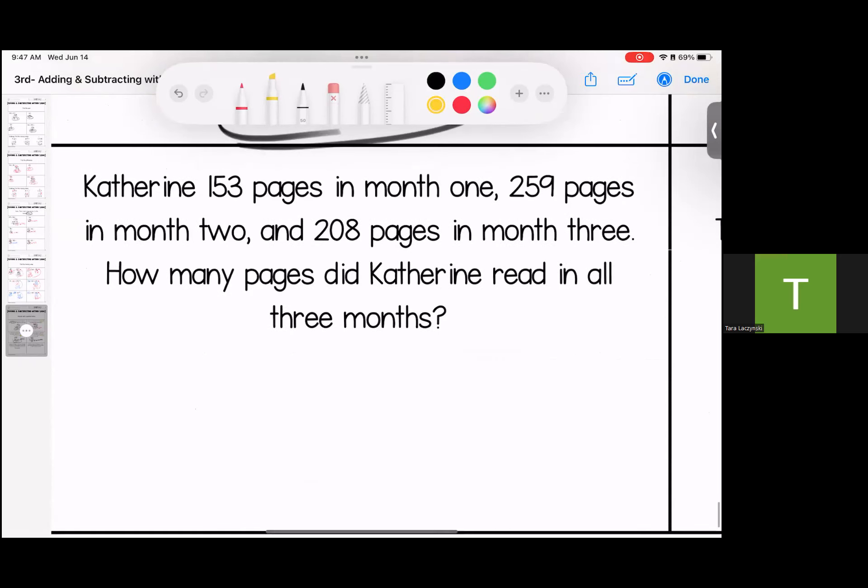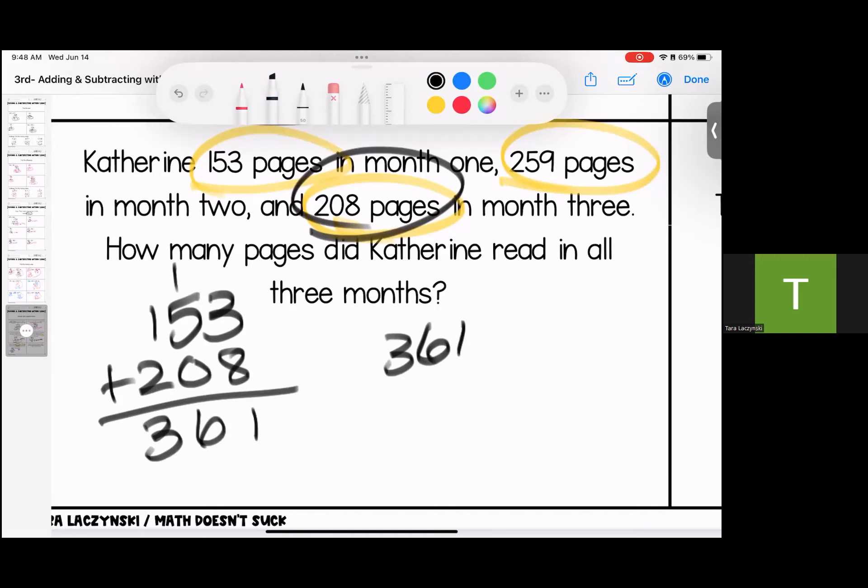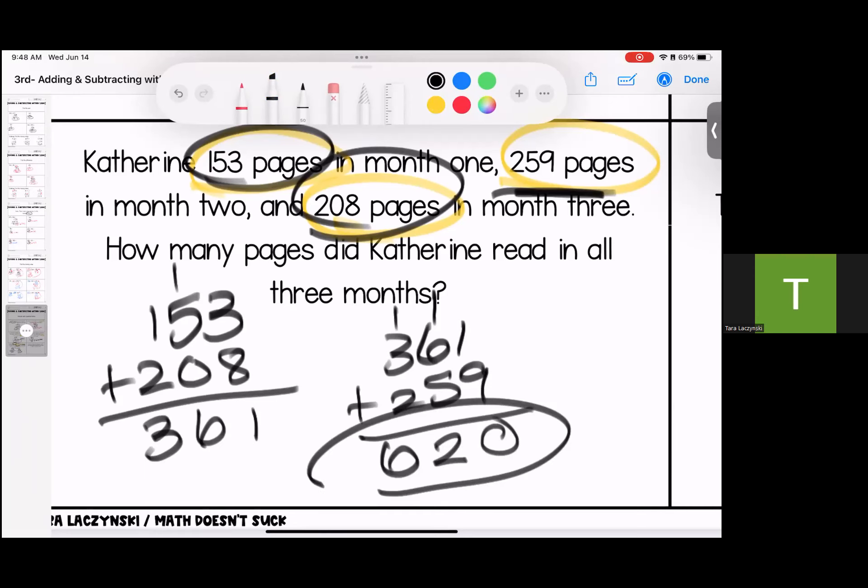Catherine read 153 pages in one month, 259 pages in month 2, and 208 pages in month 3. How many pages did you read all together? We have a triple stack. I'm going to break them into two problems. 3 plus 8 is 11, 5 and 1 is 6, 2 and 1 is 3. And then I'm going to add my last month. I have a carry, I have a carry. 620 pages.